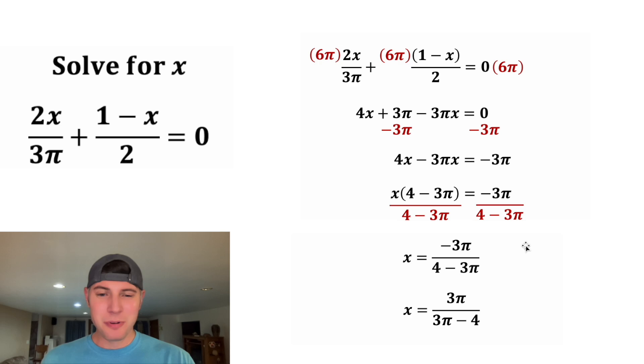So I don't know, which one do you prefer? Negative 3π over 4 minus 3π? Or 3π over 3π minus 4? I think this one looks a little bit neater. Let's put a box around it. The question asks us to solve for x. So this is the answer to our question, how exciting.